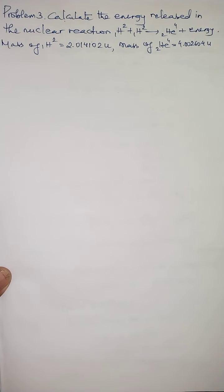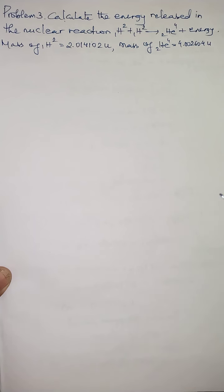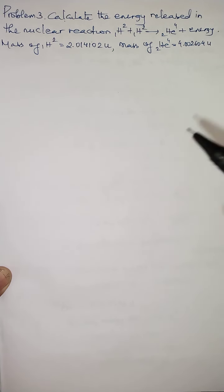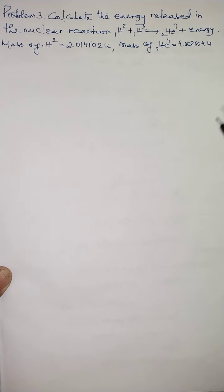All right, my dear children. Now we will solve the last numerical problem from this chapter on mass-energy equivalence. This is also a problem based on finding the binding energy under a nuclear reaction. With this numerical problem we will complete this chapter and move to the next chapter on nuclear fusion and nuclear fission.